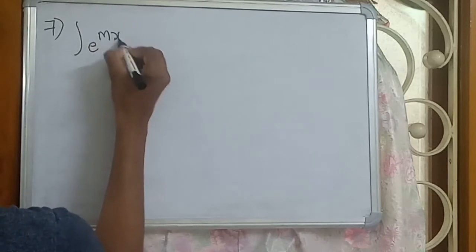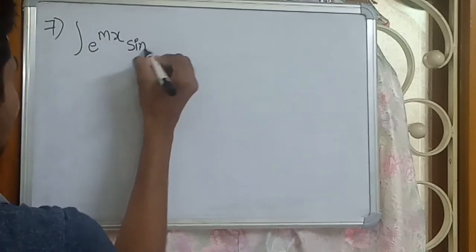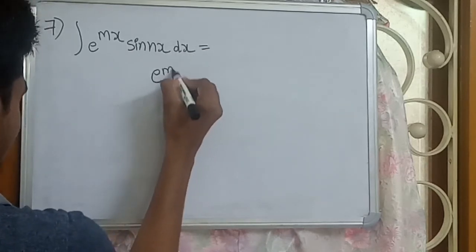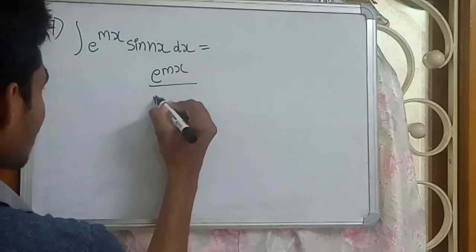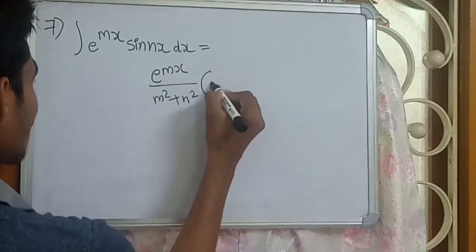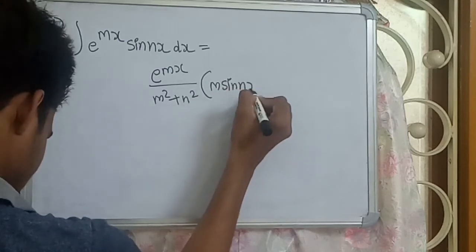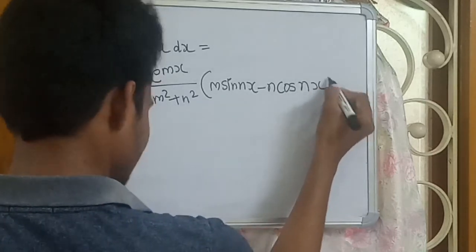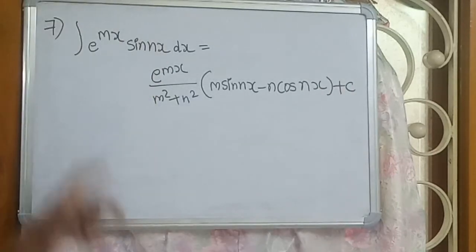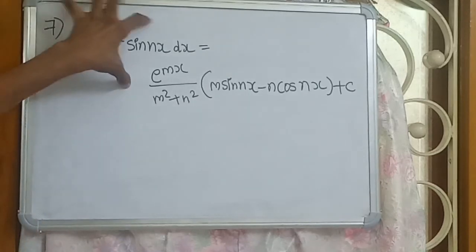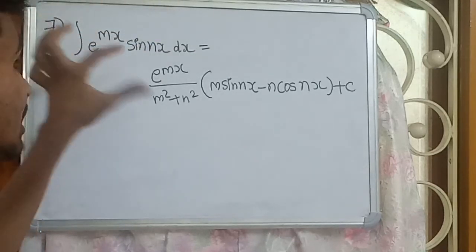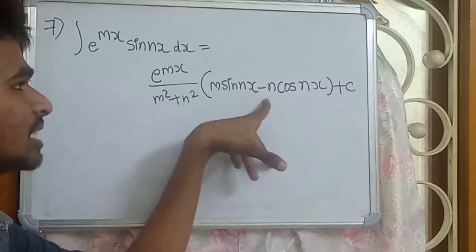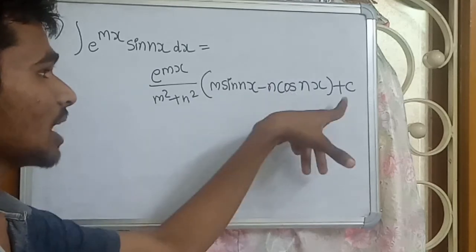Seventh formula: integration of e to the power mx times sin nx dx equals e to the power mx by m squared plus n squared times (m sin nx minus n cos nx), plus C.